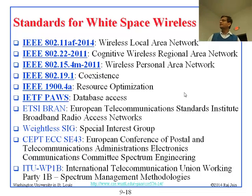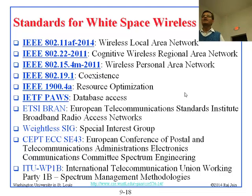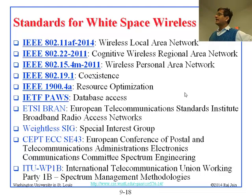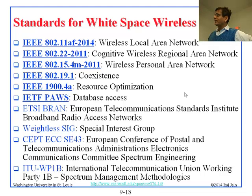Now that we know white space exists in St. Louis, how do we use it? We need the standards and the devices. IEEE has working groups on wireless LAN white space, wireless RAN (regional area network), and wireless PAN (personal area network) for white space. IETF is working on databases. ETSI and Weightless SIG are European groups working on wireless standards. SEPT is another European group. And ITU covers the whole world. Everybody is working on white space now.